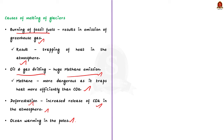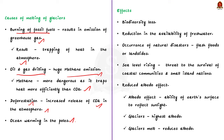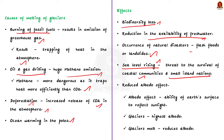Regarding the effects: firstly, glacial melting can cause biodiversity loss, as glaciers are the natural habitat of many animals. Secondly, melting glaciers reduce the availability of fresh water, leading to water scarcity for drinking and irrigation, and resulting in food insecurity. Thirdly, melting glaciers can create natural disasters such as flash floods and landslides with catastrophic effects on human life and infrastructure. Fourthly, glacial melting contributes to rising sea levels, threatening coastal communities and small island nations.